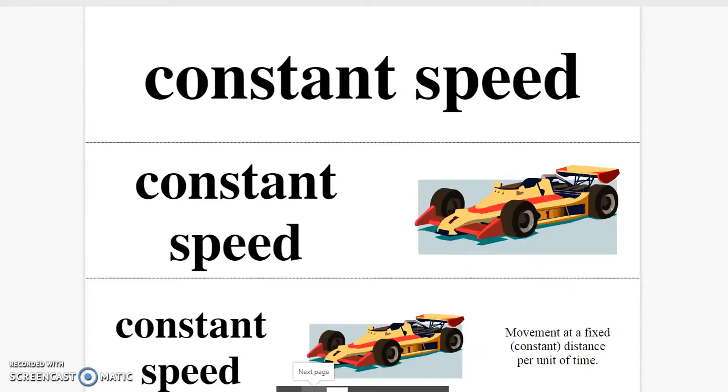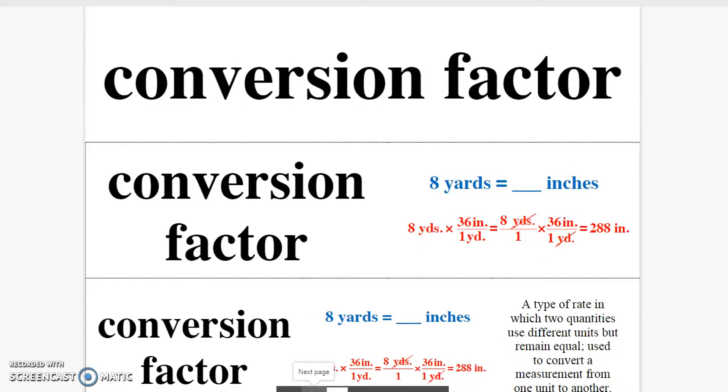Constant speed. Movement at a fixed distance per unit of time. Conversion factor. A type of rate in which two quantities use different units but still remain equal. Used to convert measurement from one unit to another.